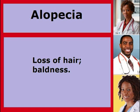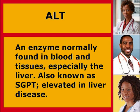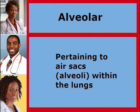Alopecia: Loss of hair; baldness. ALT: An enzyme normally found in blood and tissues, especially the liver; also known as SGPT; elevated in liver disease. Alveolar: Pertaining to air sacs, alveoli, within the lungs.